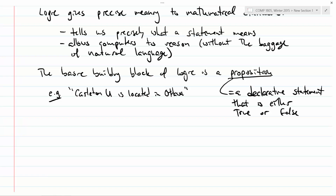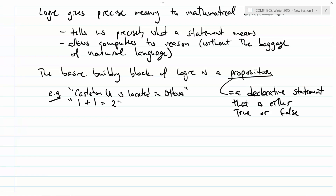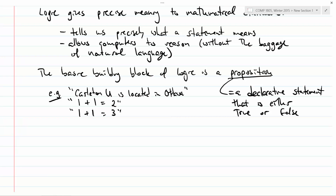Another example: 'one plus one equals two' — that is a declarative sentence and it's true. Another: 'one plus one equals three' — that is also a proposition, declaring that the thing on the left equals the thing on the right. It just happens to be false. A proposition that's false is still a proposition — it just means that it's false, and that's perfectly fine.